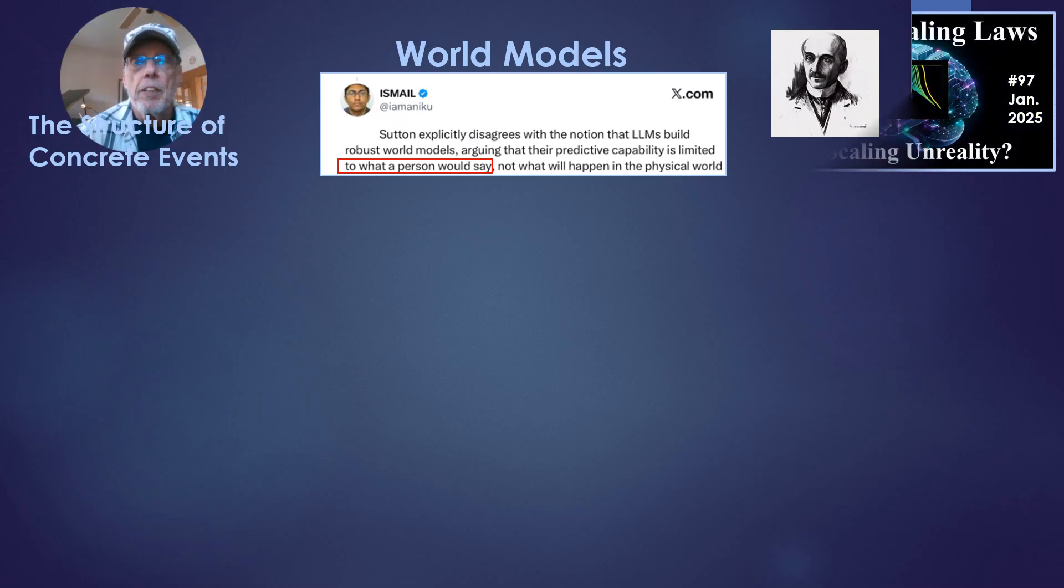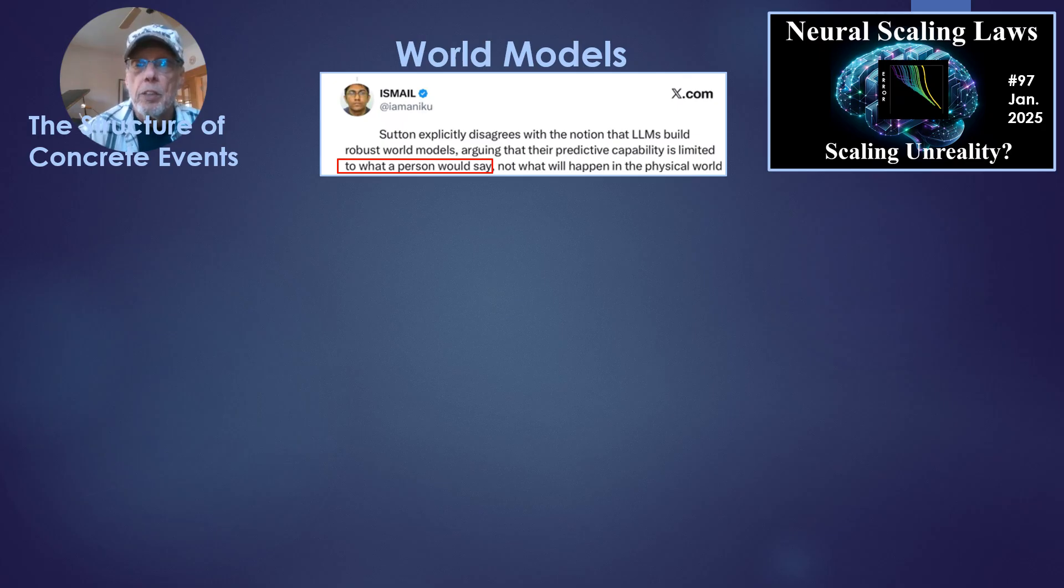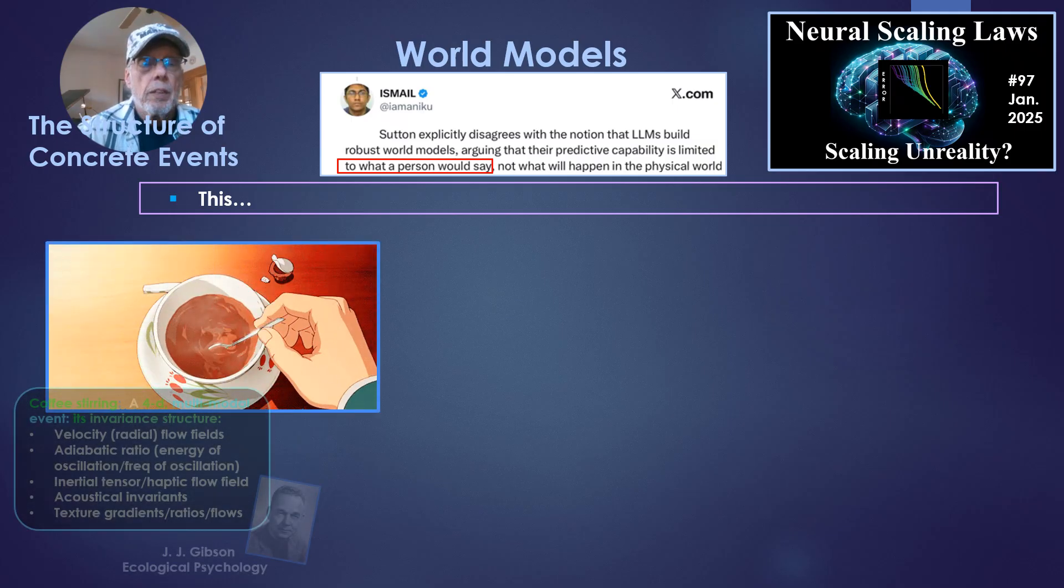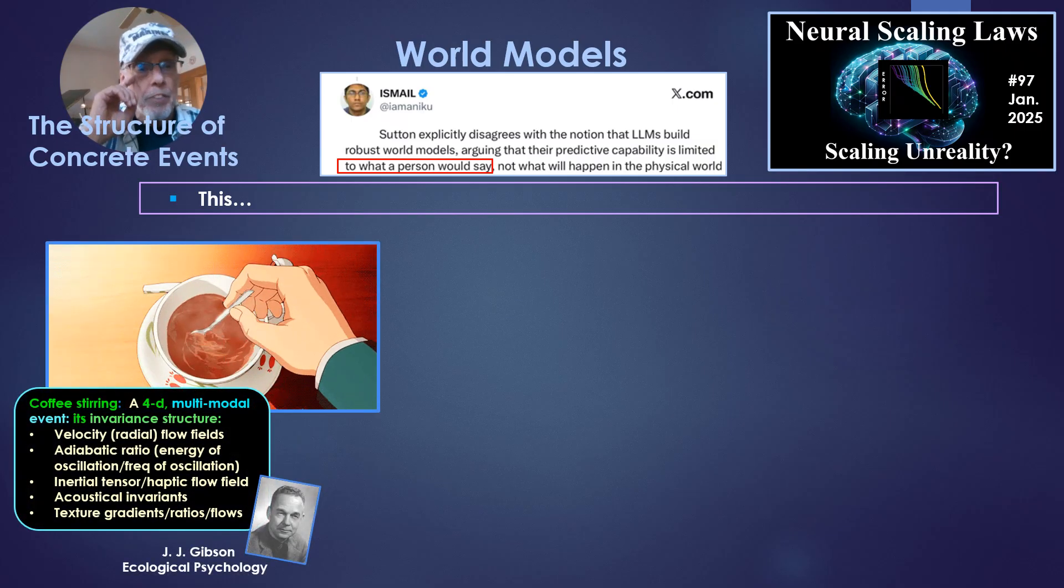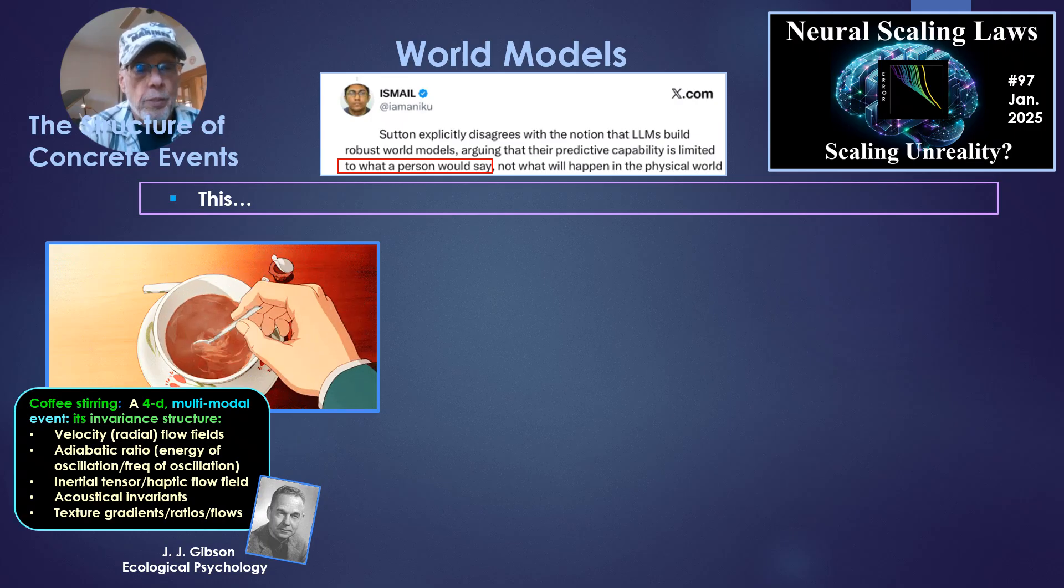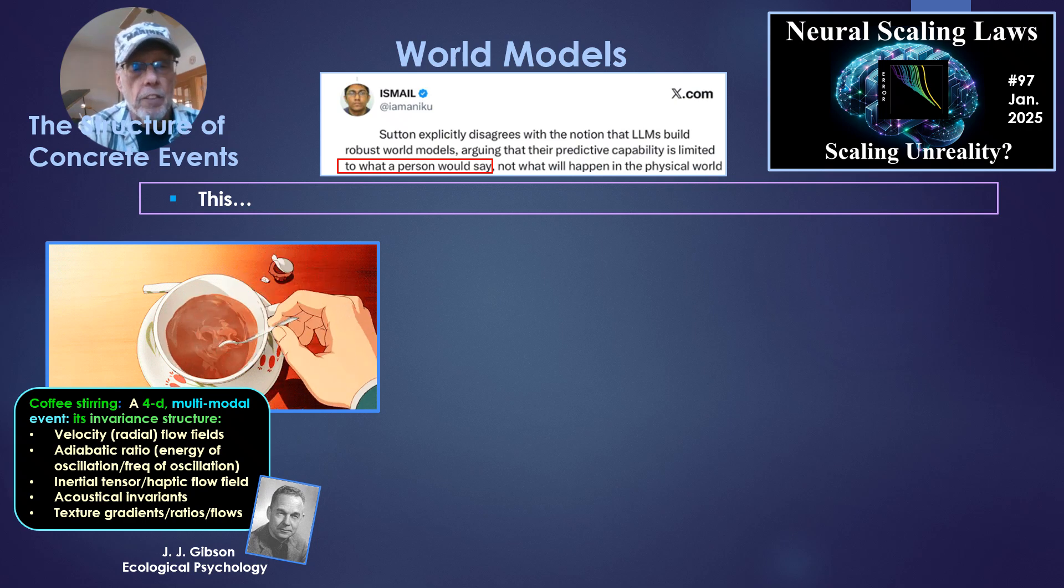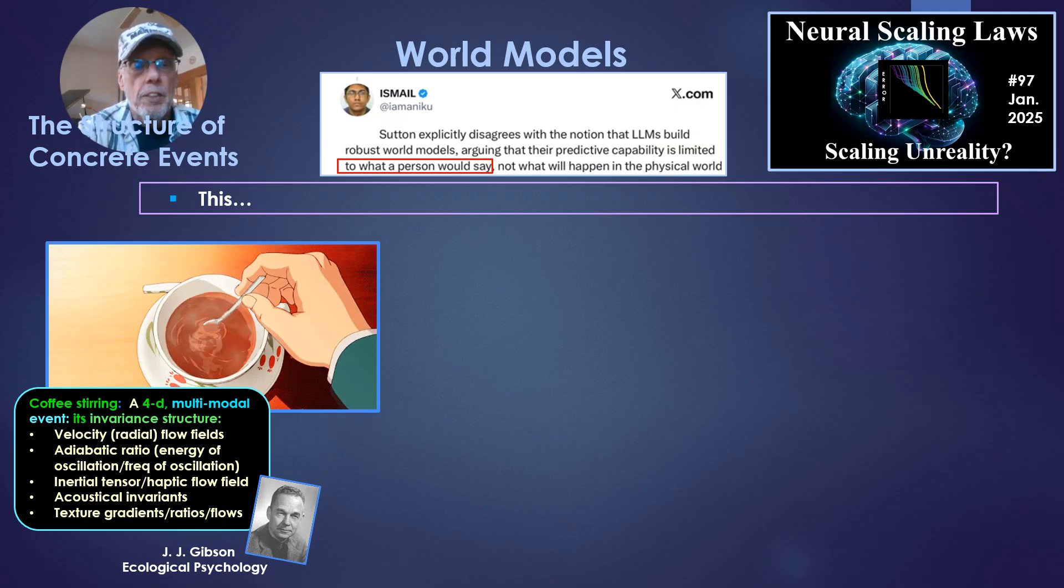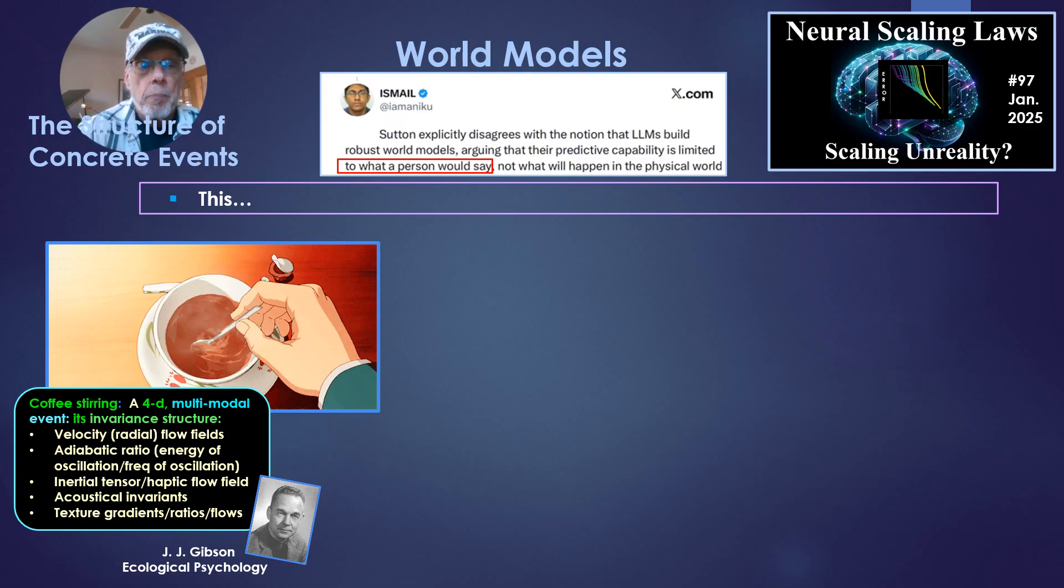I'm taking a slide or two from this one I did, Neuroscaling Law, Scaling in Reality. This, the dynamic event, coffee stirring, my favorite, a four-dimensional, extended over time, multimodal event. And its invariant structure. It has velocity flow fields, adiabatic ratios, the energy oscillation, the frequency of oscillation. The inertial tensor, carried over the haptic flow field, where that inertial tensor is specific to the length of the spoon. Acoustical invariants, texture gradients, ratios, flows, all part of J.J. Gibson ecological psychology.